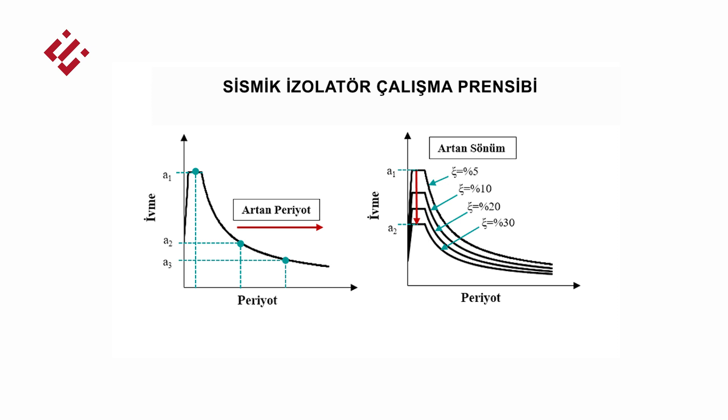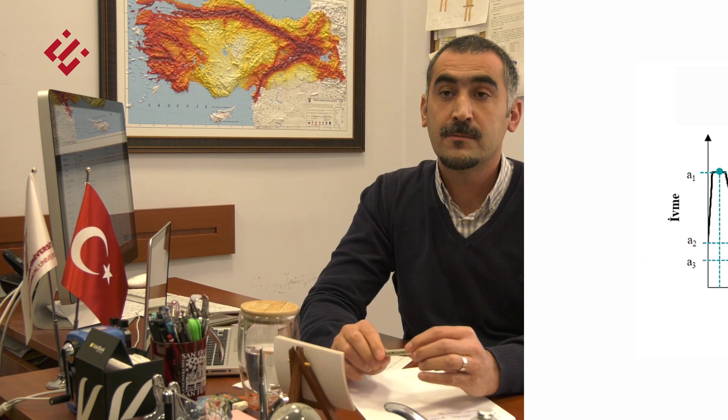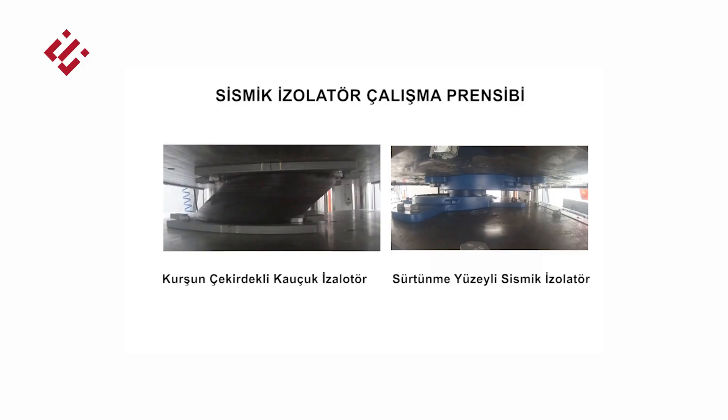Sismik izorasyon yönteminde hedef, yapının titreşim periyodunu uzatarak yüksek frekanslı titreşimler açısından zengin olan deprem etkilerinden yapıyı uzaklaştırmaktır. Bu sayede yapılarımızı standart bir tasarıma kıyasla %80 oranında daha az deprem kuvvetleri altında tasarlamak mümkün olmaktadır. Böylesi bir davranış hem izoratörün yatay doğrultudaki düşük rijitliği hem de yüksek oranda enerji sönümlemesi sayesinde mümkün olmaktadır. Bu beklentiyi kontrol etmenin ve malzemelerin doğru üretildiğini belirlemenin yegane yolu uygun koşullarda testlerin gerçekleştirilmesidir.